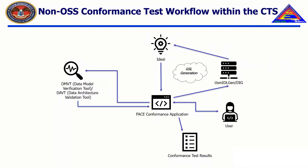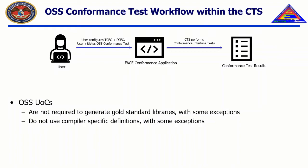At a high level, the user must compile the gold standard libraries based on the options from the project and toolchain configuration files, compile their USE against the gold standard libraries, and then use the object files to test for conformance. The OSS testing workflow is now shown.